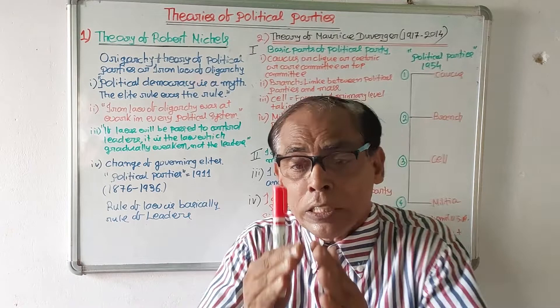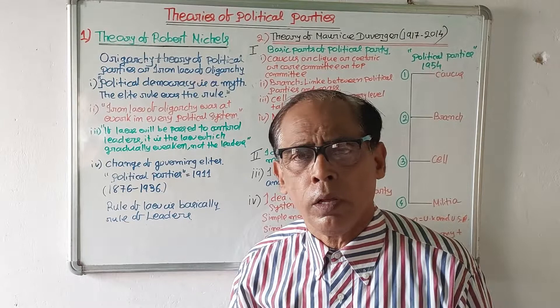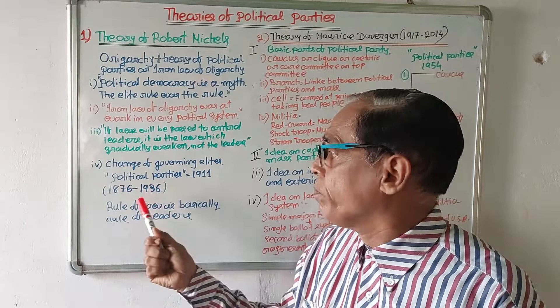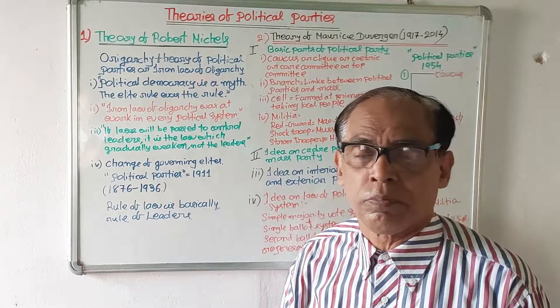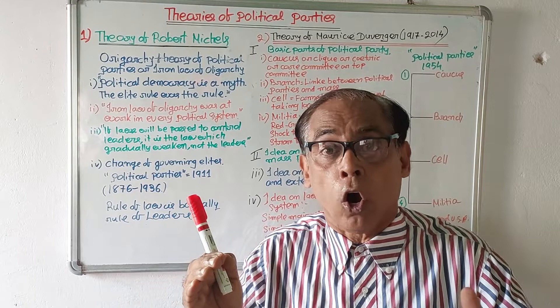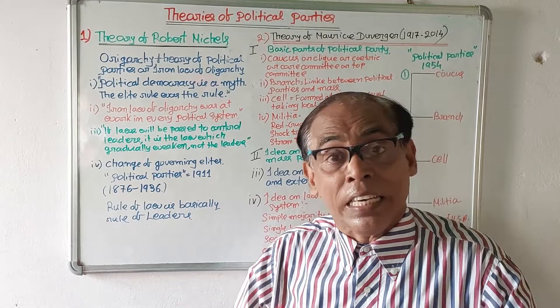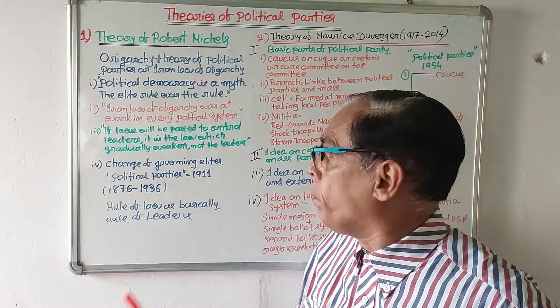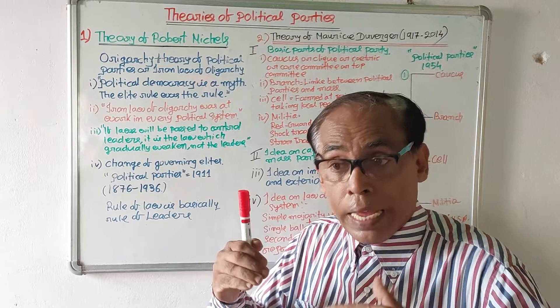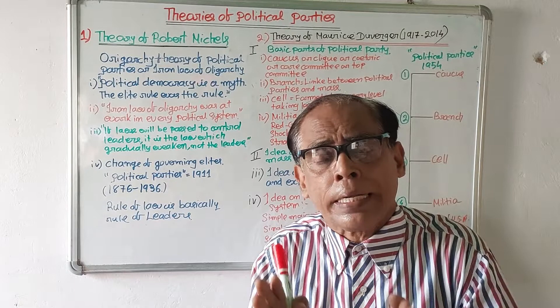First, let us take up the theory of Robert Michels. Robert Michels was born in the year 1876 and died in the year 1936. He was a very important scholar of elite theory in the 20th century. In his book Political Parties, published in the year 1911, he expressed a lot of things about political party and party system.